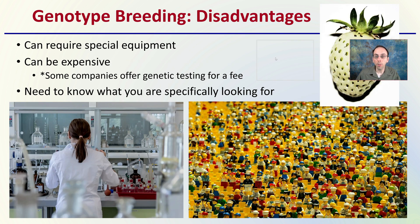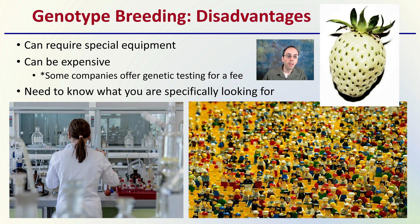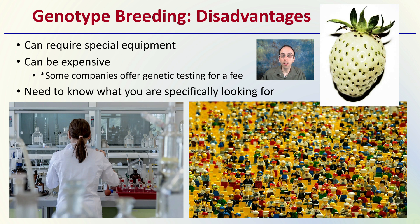However, there are also disadvantages to genotype breeding. It can require specialized equipment and can also be expensive. Some companies offer genetic testing for a fee; others do it in-house with significant upfront costs. You also need to know what you're specifically looking for — you may be able to find the whole genetic sequence or certain targeted sequences, but you need a way of knowing which particular sequences you're actually looking for.